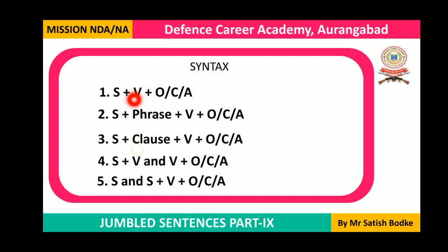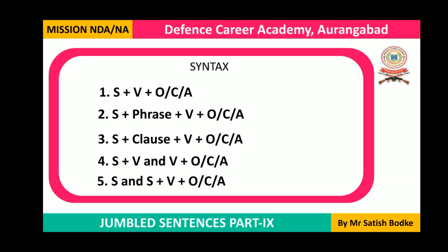Sometimes between the subject and the verb, another part — a clause or a phrase — can be inserted. Also, two verbs can be joined by 'and' and both of them may refer to the same subject. Two different subjects can also be joined by 'and' and referred to with a single verb. All these elements of the sentence are followed by an object, complement, or adverbial, which are the last parts of the sentence.